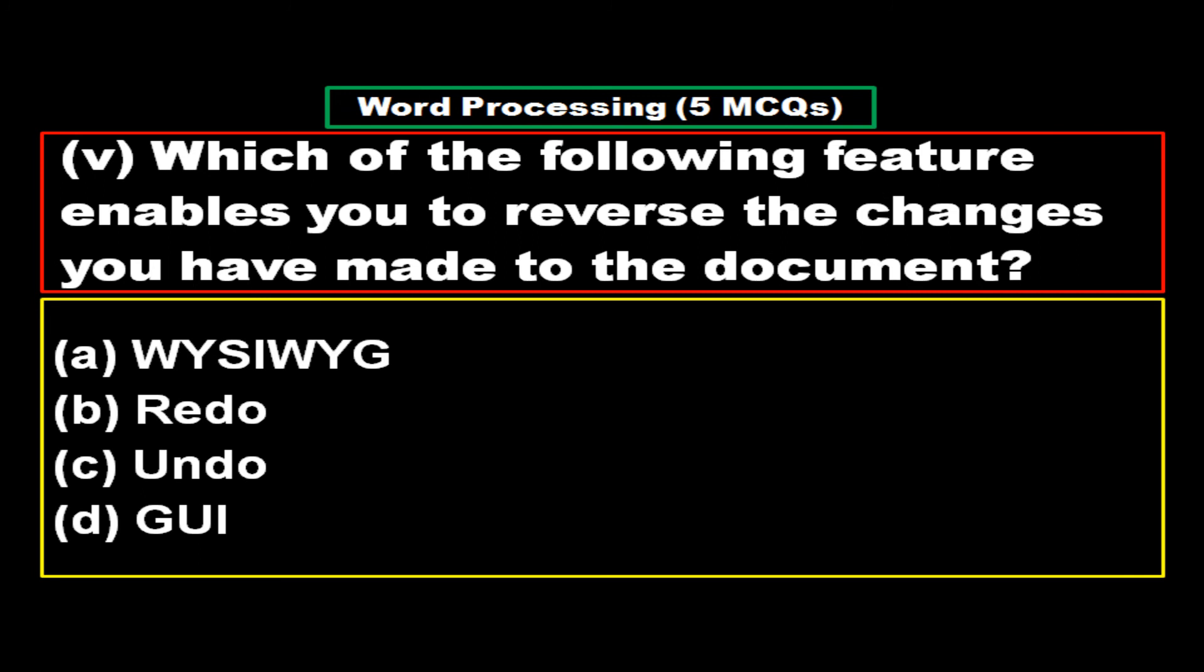Which of the following feature enables you to reverse the changes you have made to the document? Options: A - WYSIWYG, B - Redo, C - Undo, D - GUI. And the right answer is option C, Undo.